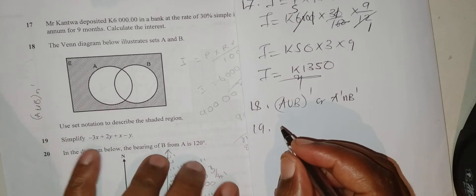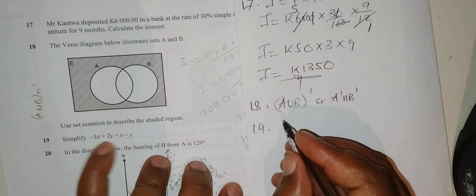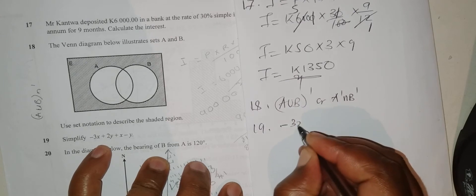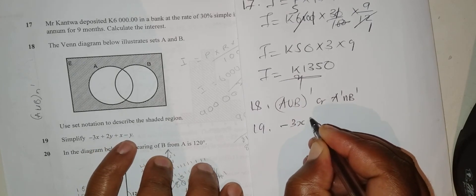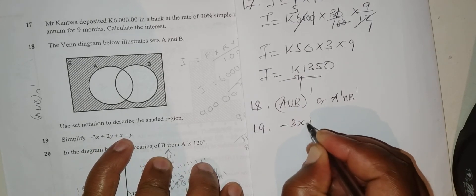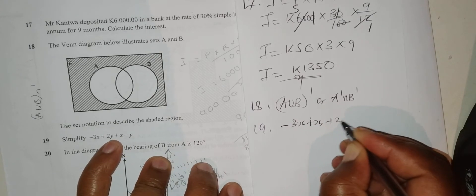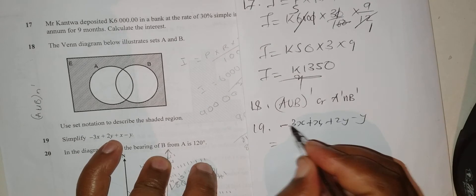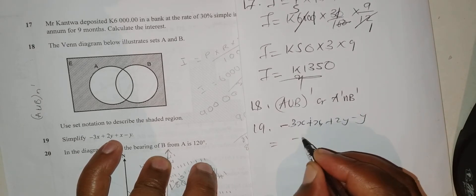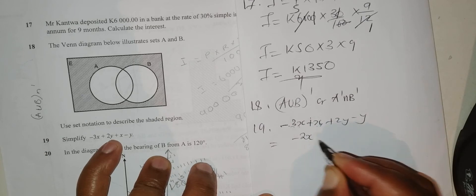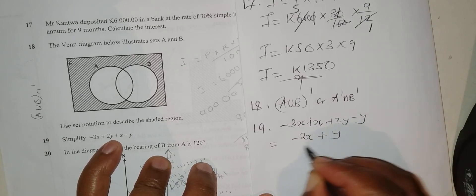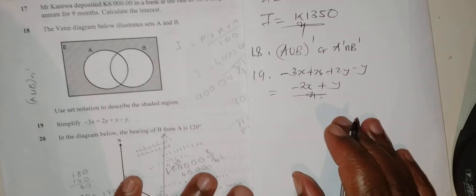Question 19: Simplify negative 3x plus 2y plus x minus y. Negative 3x plus x equals negative 2x. Plus 2y minus y equals y. This is your answer: negative 2x plus y.